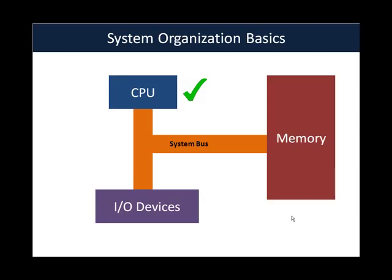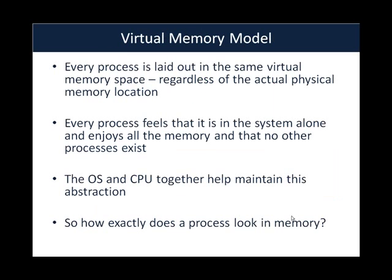We've covered the CPU in enough detail to begin programming. Now let's look at memory. The first thing one needs to understand is the virtual memory model. Whenever any program is executed, it is overlaid as a process in memory. Every process gets laid out in the same virtual memory space regardless of the actual physical location of that process. Imagine you have two gigs of RAM — a new process could be overlaid anywhere in the actual RAM.